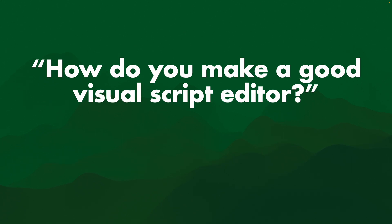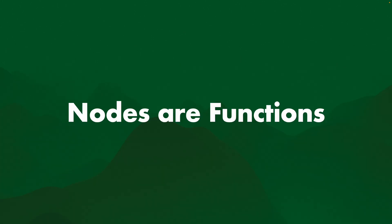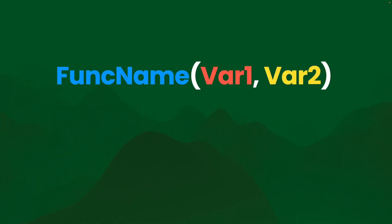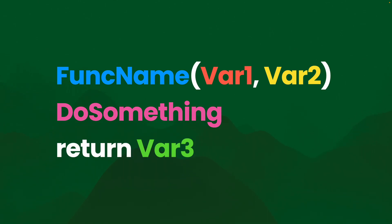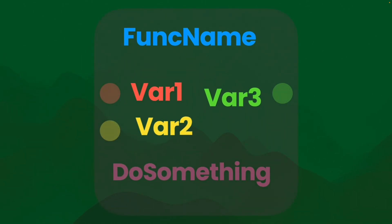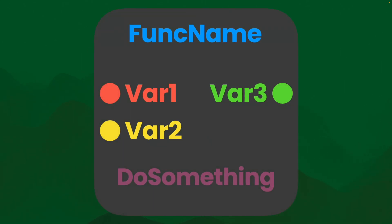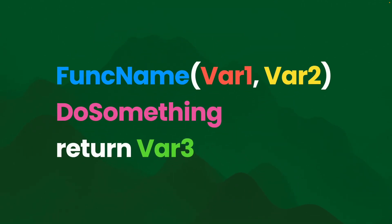People often ask how do you make a good visual script editor? The answer is: make a good API, because nodes are functions. Take a function — it takes in two variables, does something with a bunch of code, and returns variable three. What does this look like as a node? It's exactly the same. The 'do something' might be hidden behind it, you might double-click to get to the code, but it's the same thing.